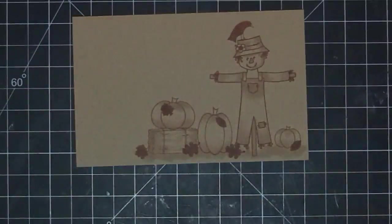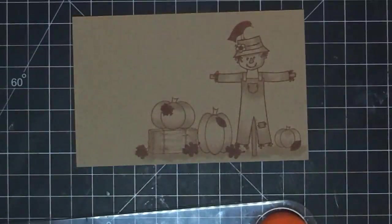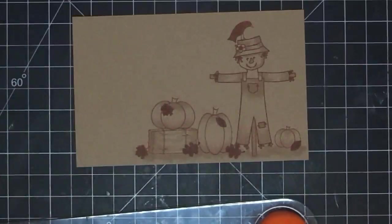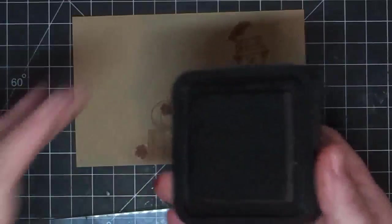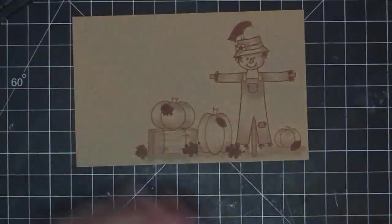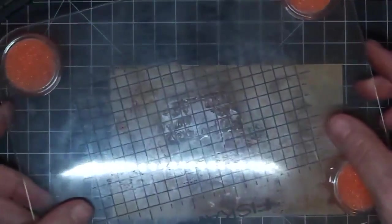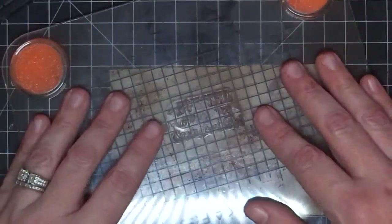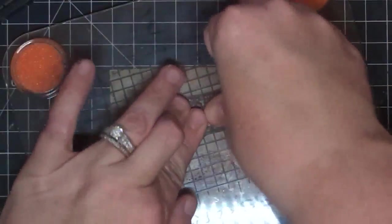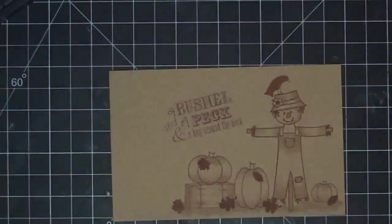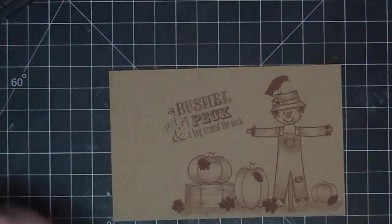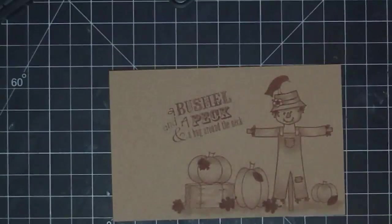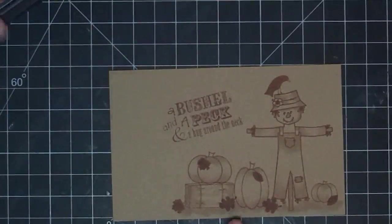Now the only other thing I did, well, there's two other things I did. I put a sentiment and I'll do that here. I used a bushel and a peg. So I'll put that down. You can't see this. I'm inking it with my vintage photo, the same one I've been using. So really it's just two inks. It's your vintage photo and your Copic marker. Stamp that in place. And then, okay. Now I'm ready to trim this down.